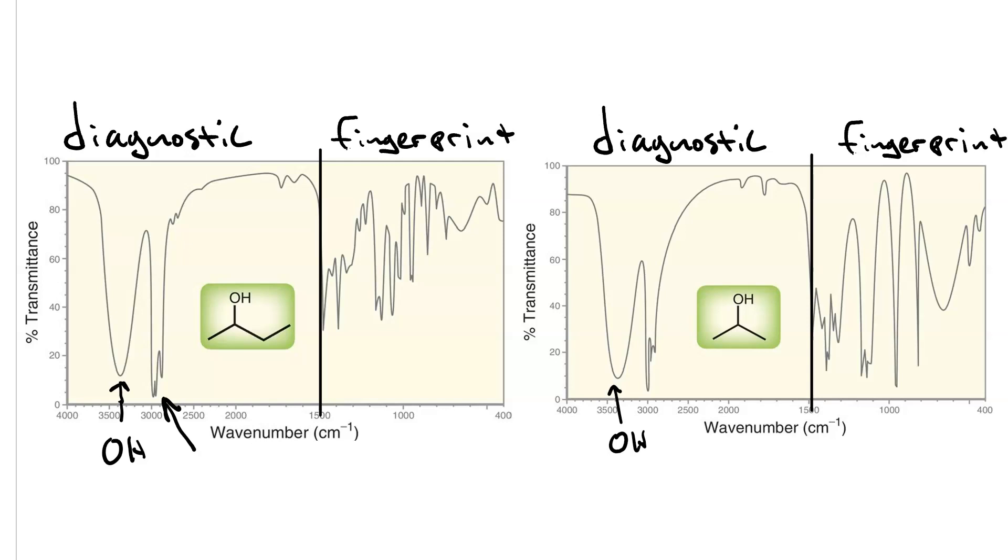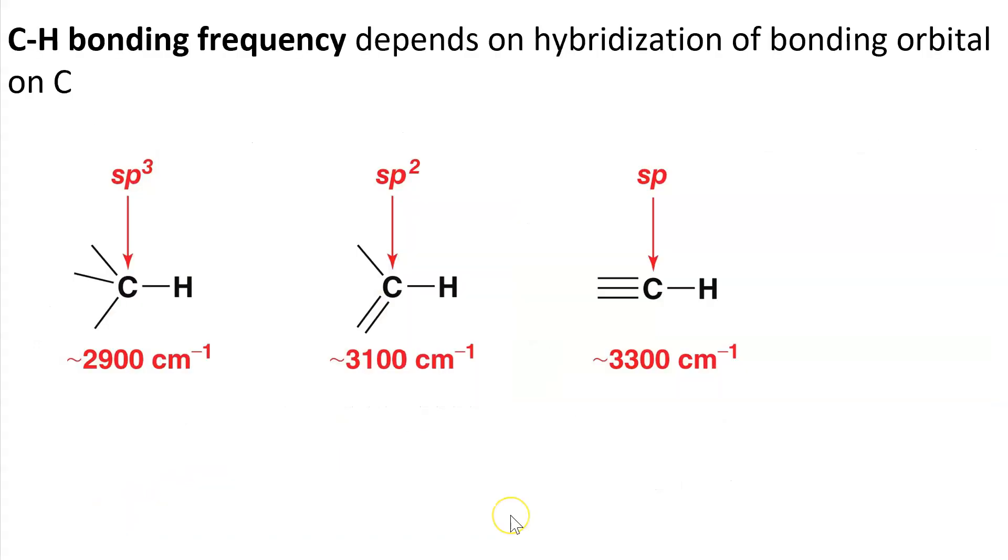And then this collection of peaks, a bunch of sharp peaks overlaid. These are sp3 C-H stretches. So at this level, what we can tell is that both of these are alcohols. And we can also tell some things by what's not there. There are no C=C double bonds, for instance.